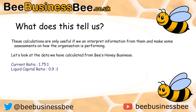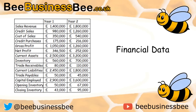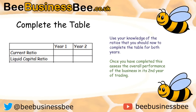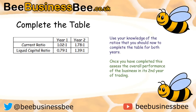On screen you will see a set of financial data which can be downloaded from the link below. Use this data to complete the table by calculating the current ratio and liquid capital ratio for both years, then assess how the business is performing in its second year of trading. You can post your written assessment below the video for review, or discuss it with a partner.